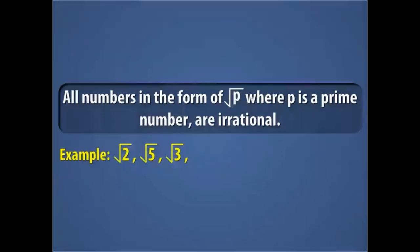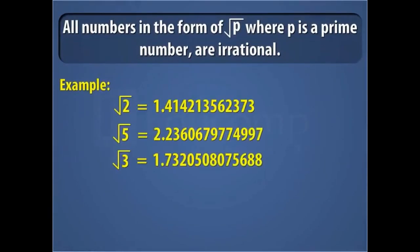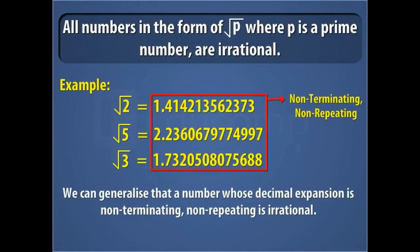The decimal expansions of all these numbers is non-terminating, non-repeating. So we can generalize that a number whose decimal expansion is non-terminating, non-repeating, is irrational.